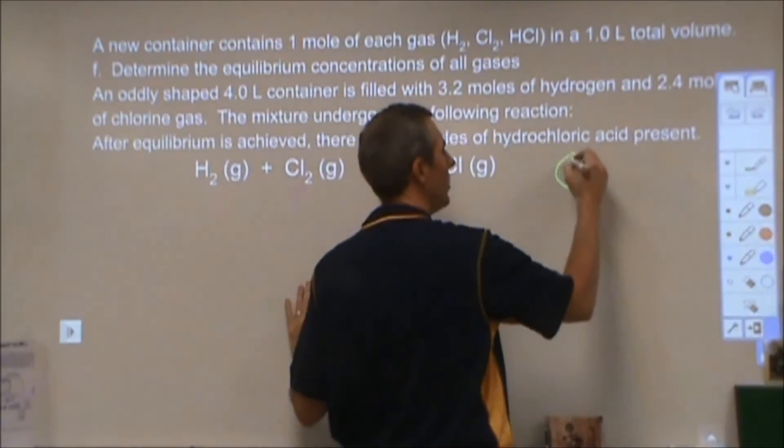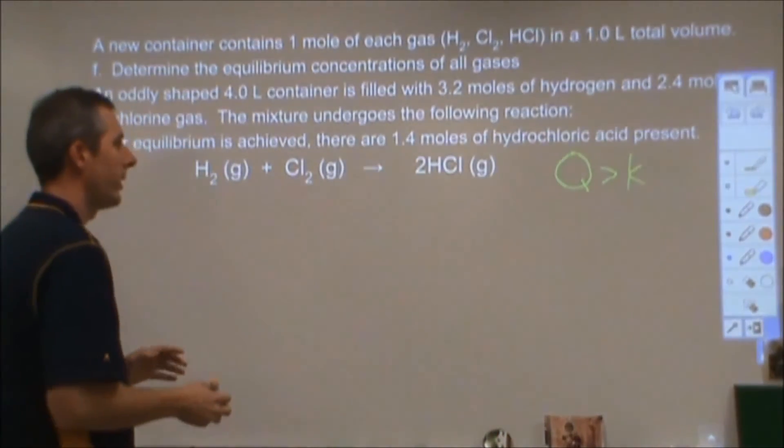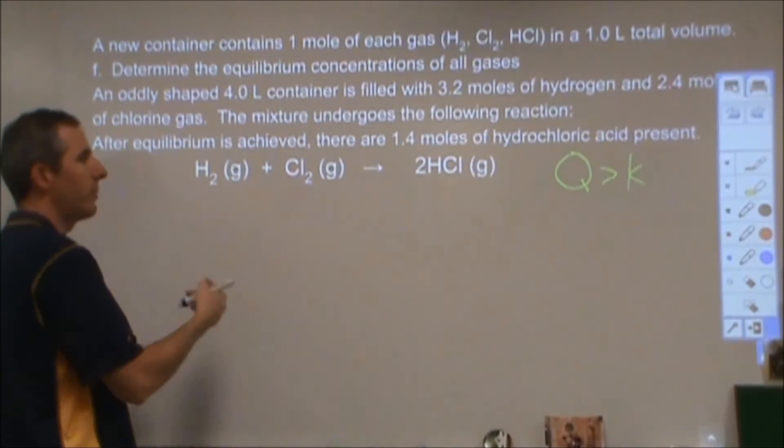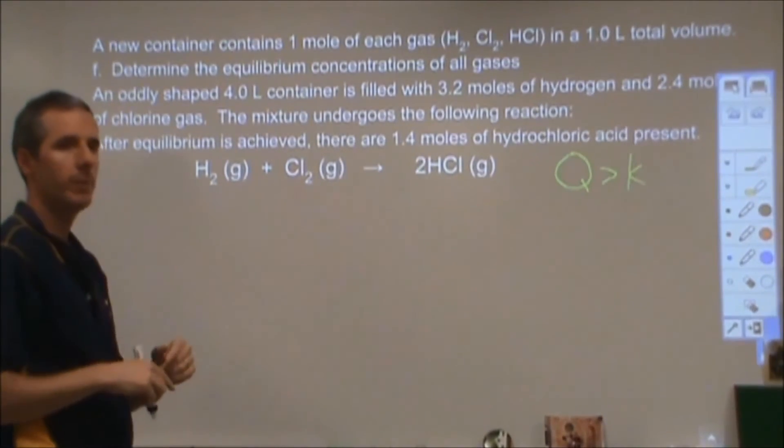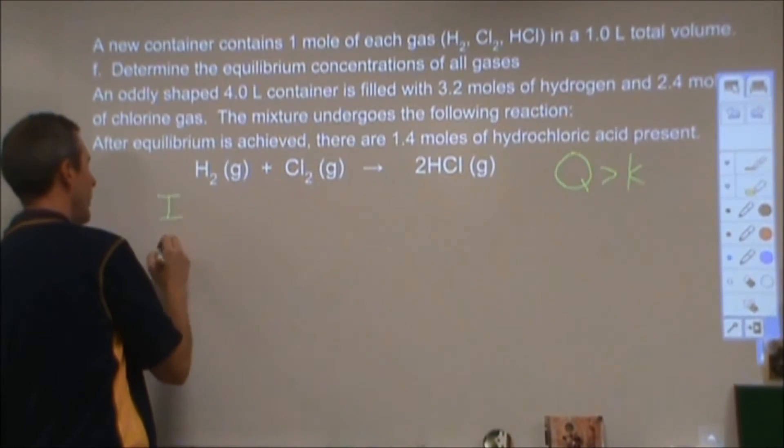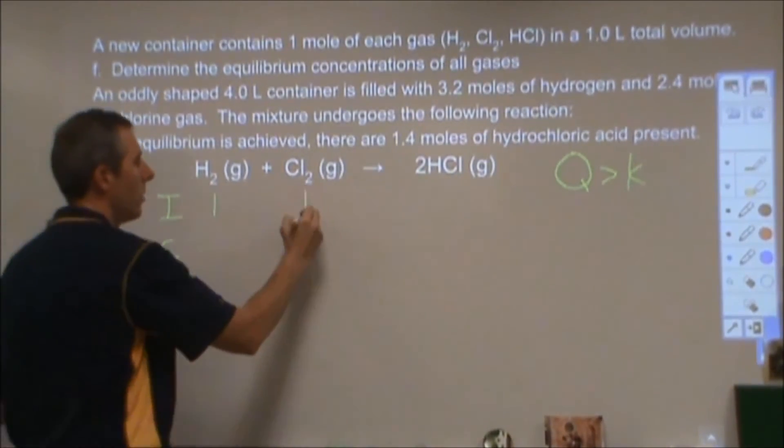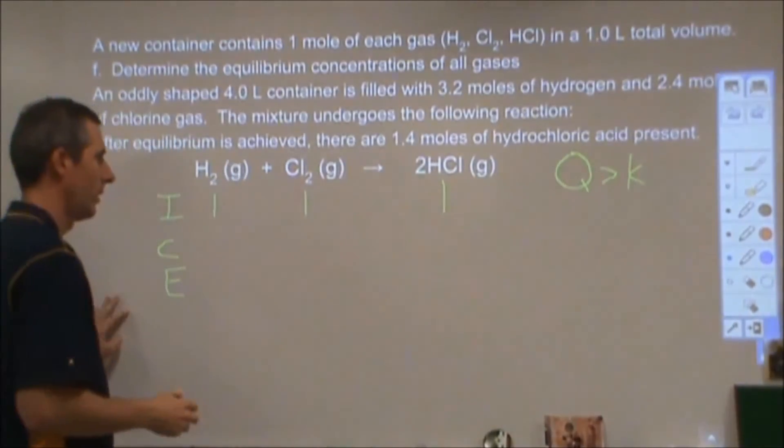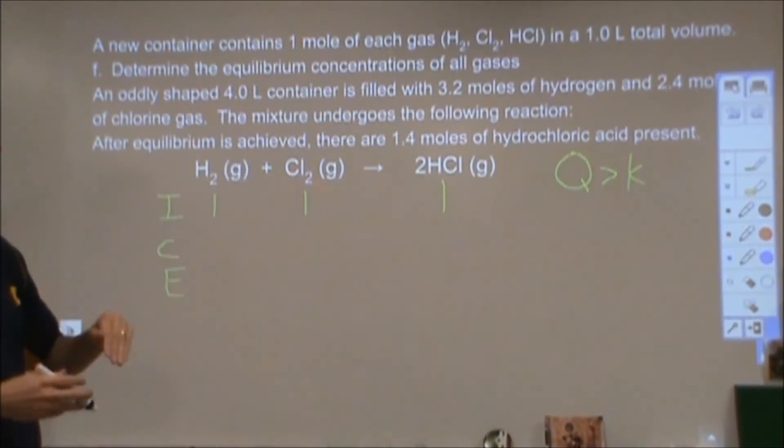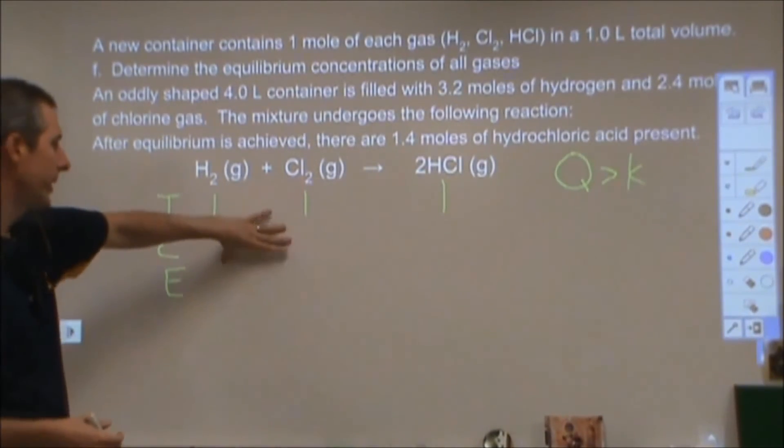So right now we know that Q is larger than K. That means that we're going to shift to the left, we're going to make more reactants, we're going to use up some product even though both reactions are still going on. We're going to do an ICE chart again. So we are starting with one molar, one molar, one molar.